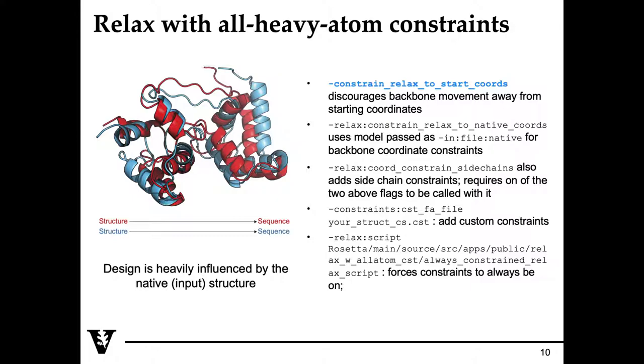Typically, instead of changing the move map, you'll pass different kinds of flags to constrain Rosetta minimization and fast relax. Design is heavily influenced by your input structure, so you want to make sure that your minimized structure still represents what you initially intended to design.